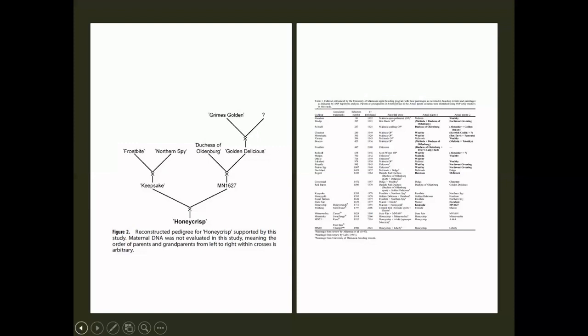The primary goal of this breeding program was to breed hardy apples. Malinda is a very cold hardy apple, hence its constant use and its heavy amount of pedigree found in various cultivars in Minnesota.